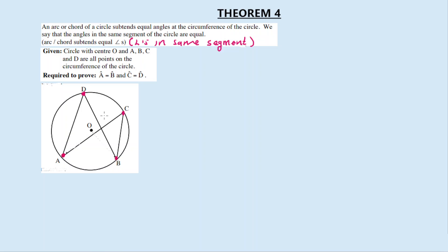The four corners touch the circle at four points — that's why it forms a bowtie shape. The bowtie is formed by connecting the four points on the circle. It doesn't necessarily have to be drawn exactly the same way. If you want to use the corners, you can connect the corners to the four points.